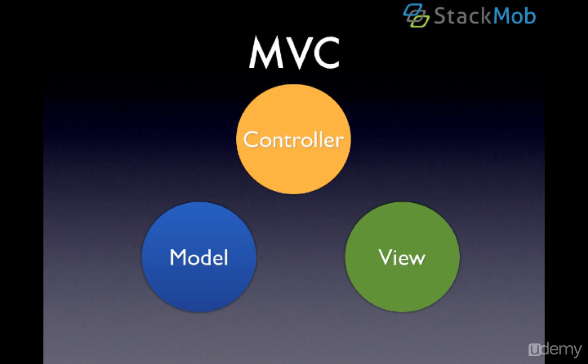Now the views tend to not know anything about the model directly, and the model doesn't directly interact with the views. Traditionally the controller will act as a way to communicate between these two. But with Backbone.js, it uses a form of MVC, but doesn't adhere to a strict definition as it was originally created.